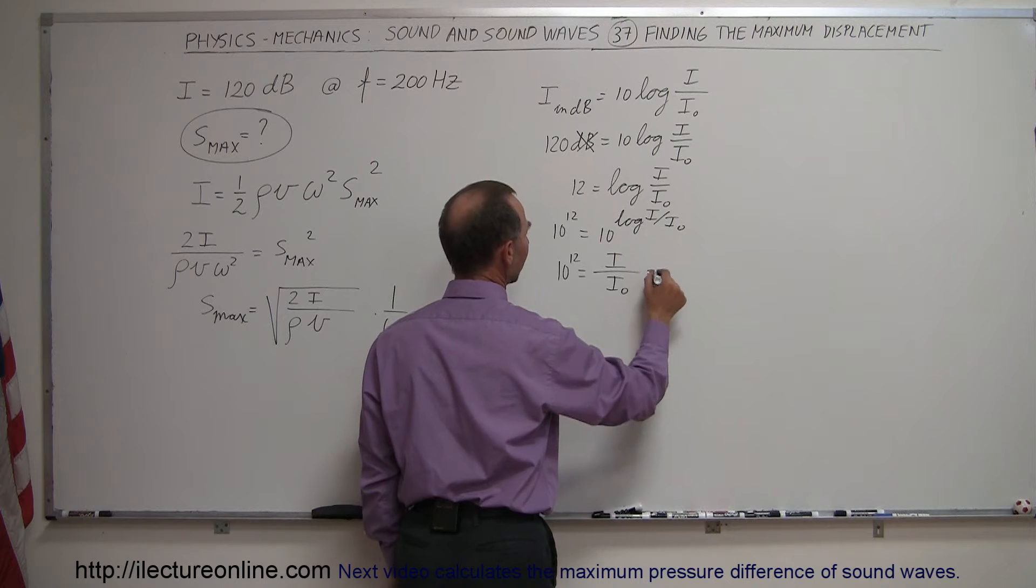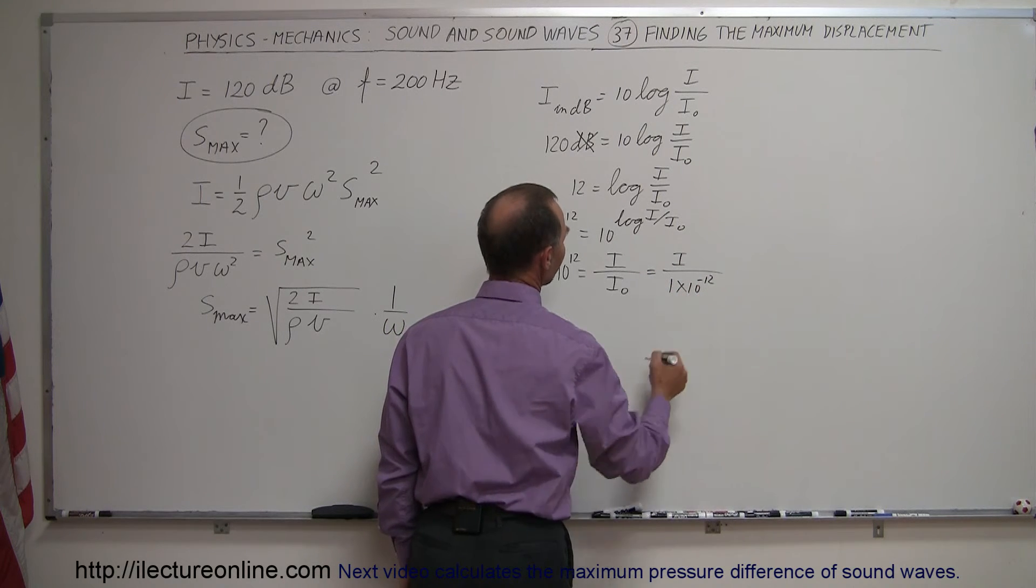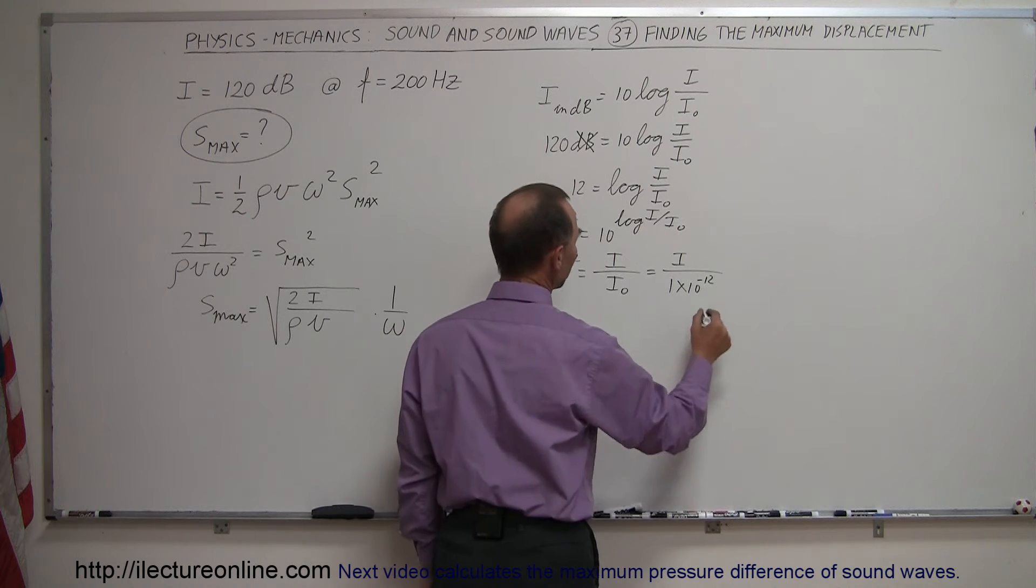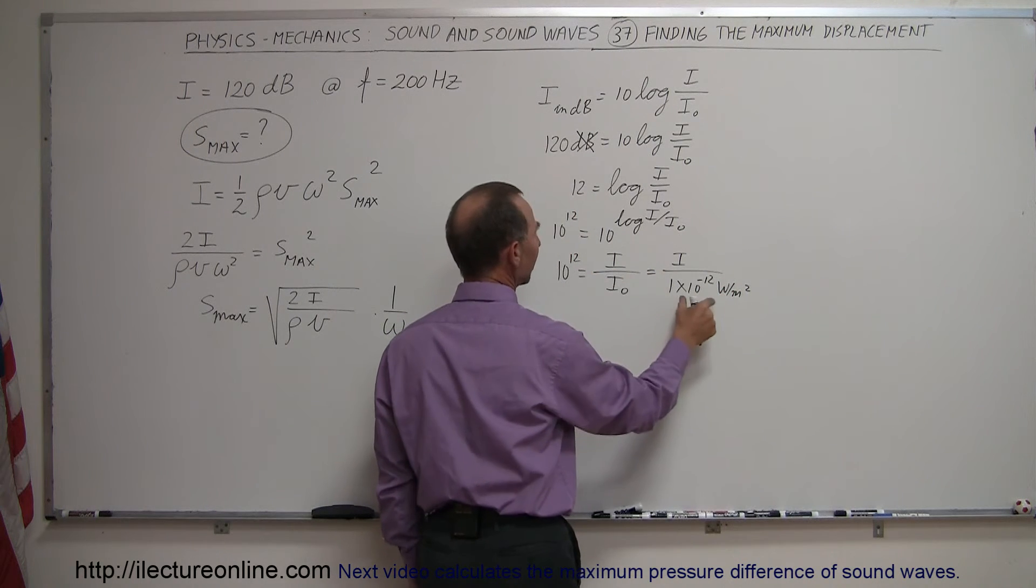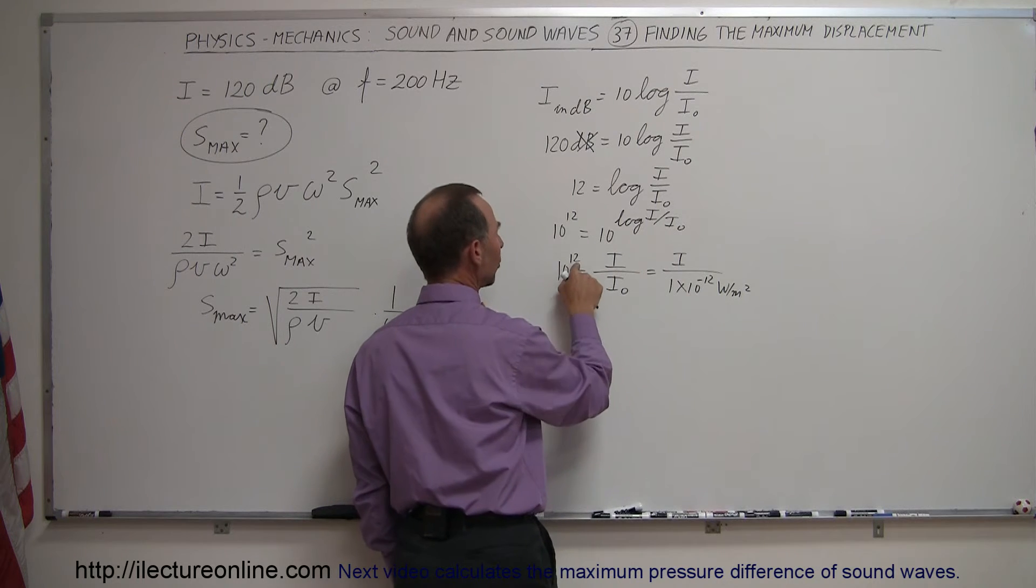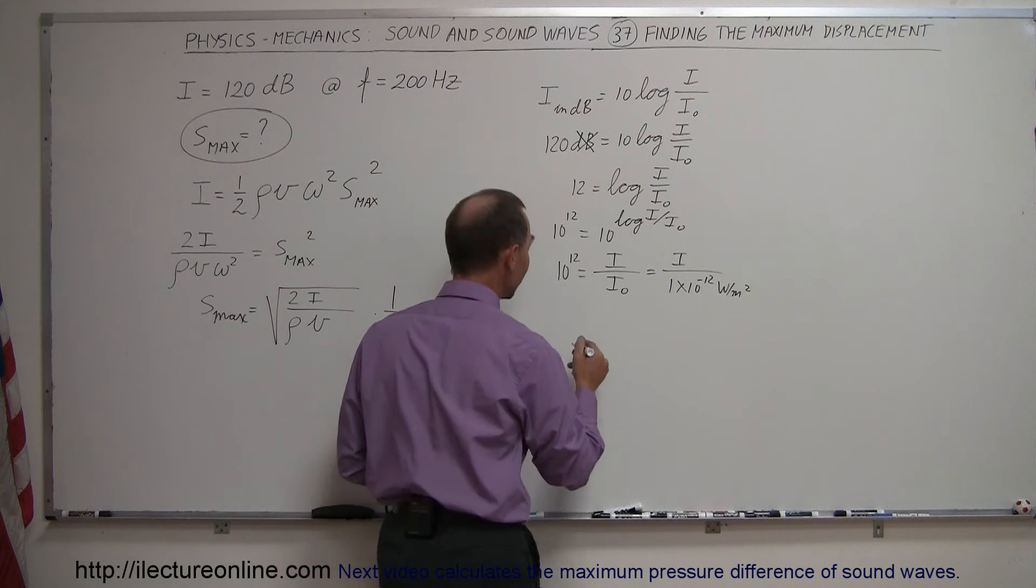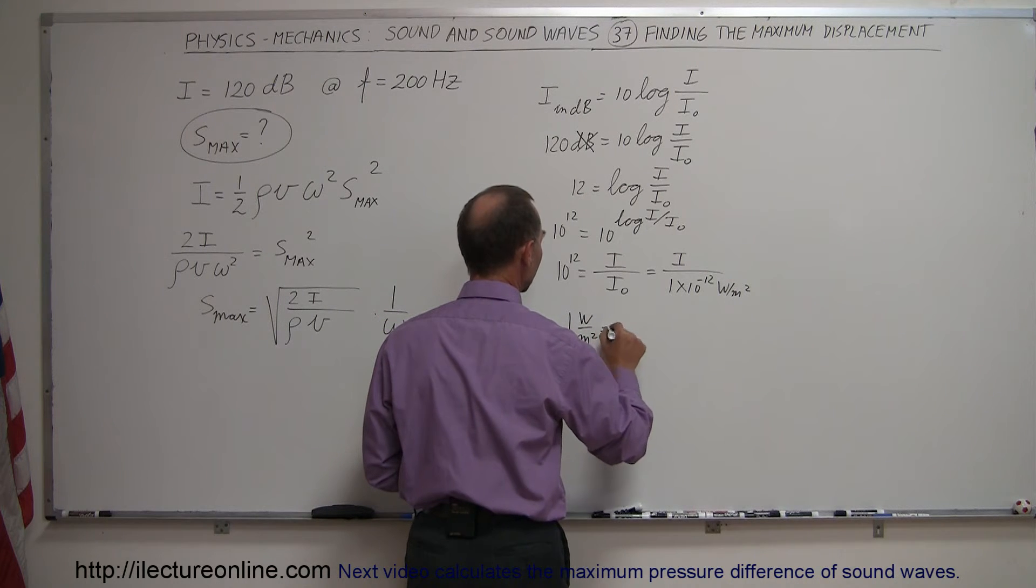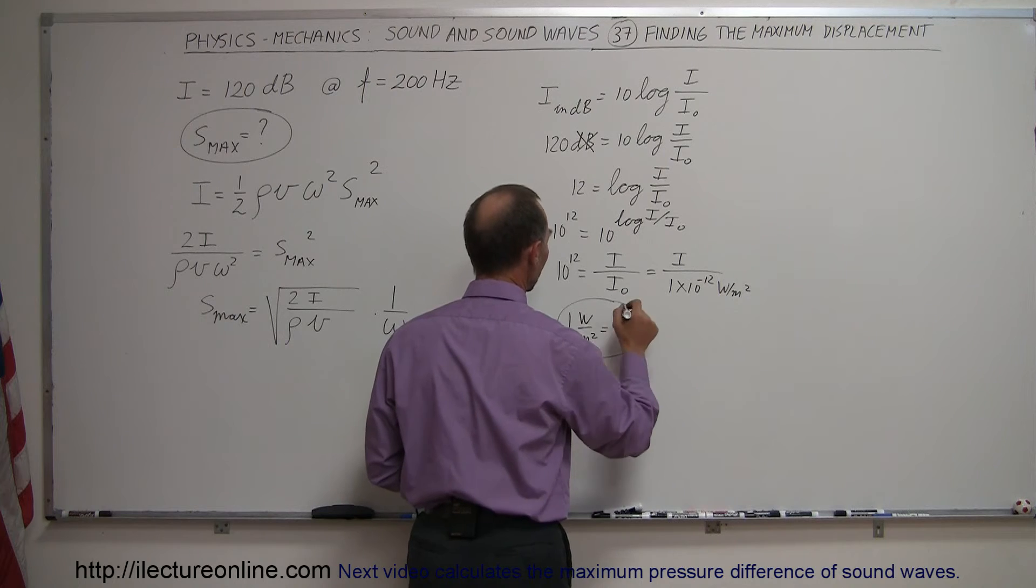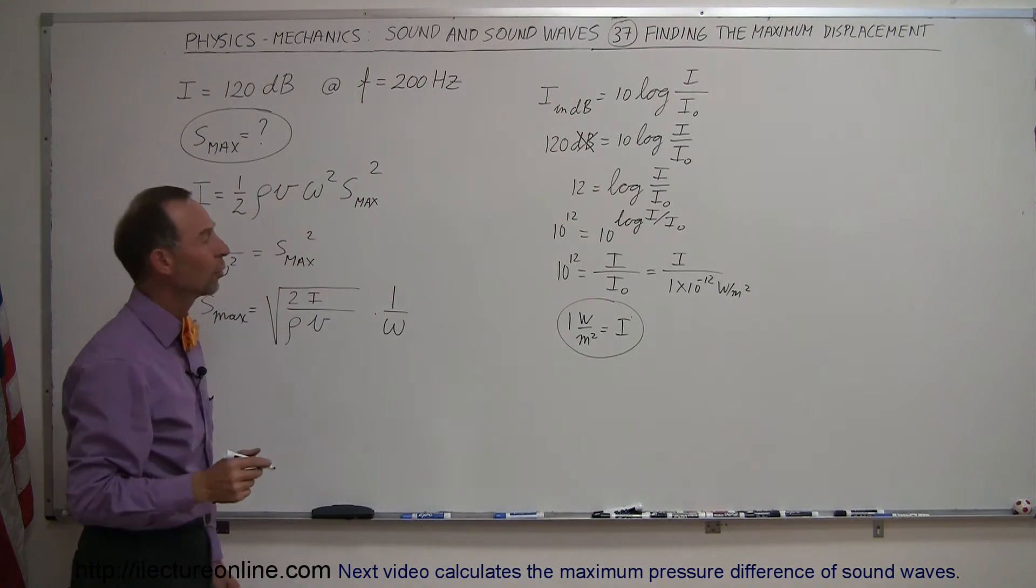I_0 is equal to 1 times 10 to the minus 12, that would be watts per square meter. And then if we cross-multiply that, 10 to the 12th times 10 to the minus 12th is equal to 1. So that cancels out. We get 1 watt per square meter is equal to the intensity, that's equivalent to the sound intensity of 120 decibels.